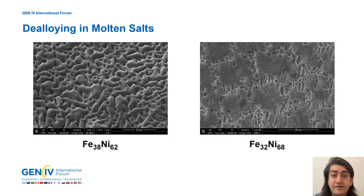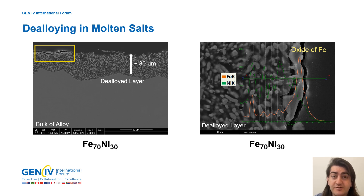Indeed, there is a parting limit for molten salts. At 68 atomic percent of nickel there is only grain boundary attack and no porosity. The dealloying does appear at certain conditions but is very superficial. More nickel suppresses the dealloying process, but at lower nickel contents, iron and chromium as active elements promote oxide formation at the surface.